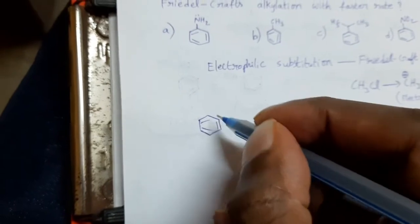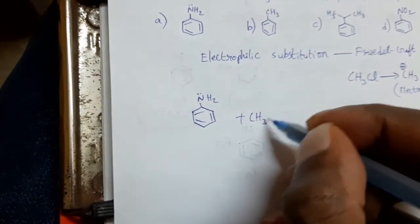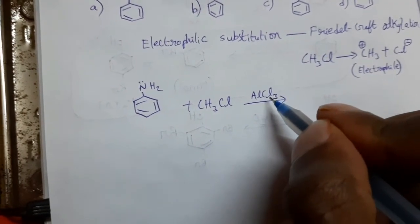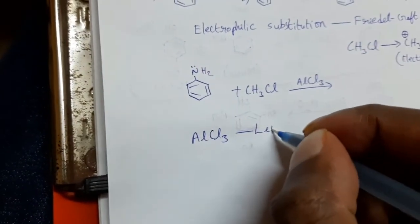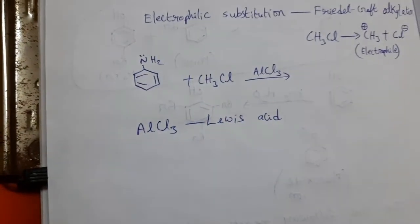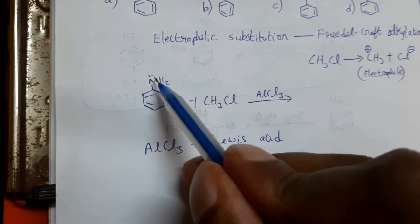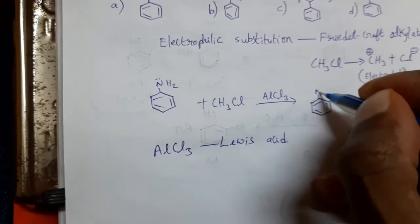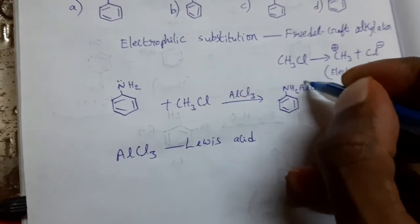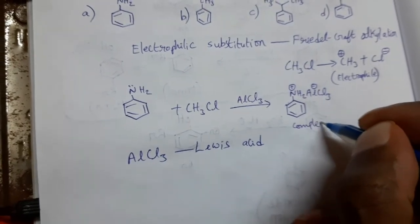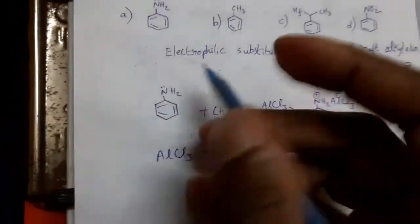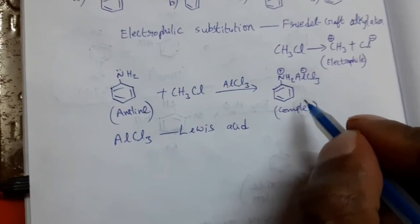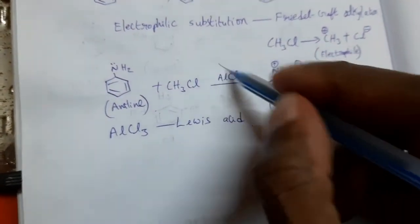Considering aniline: when aniline undergoes Friedel-Craft alkylation in the presence of AlCl3, note that AlCl3 is an electron-deficient molecule — it acts as a Lewis acid, readily accepting an electron pair. The nitrogen in NH2 is ready to donate its lone pair, and AlCl3 is ready to accept electrons. So a reaction takes place between NH2 and AlCl3, forming a complex. This complex prevents the substitution of the electrophile CH3+, so Friedel-Craft alkylation does not take place with aniline.